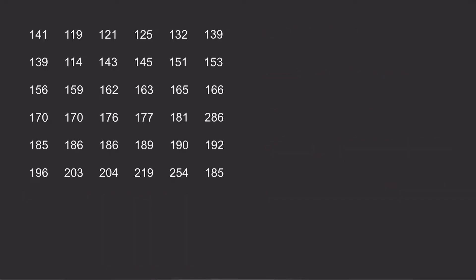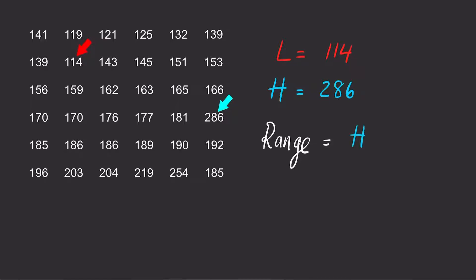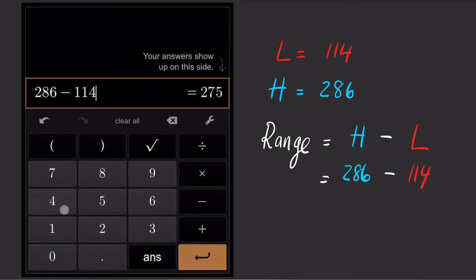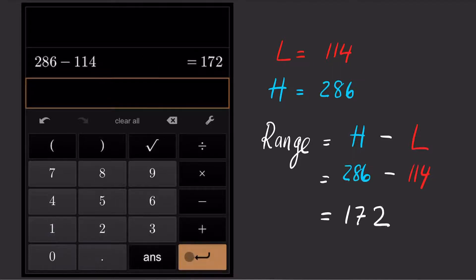To make five classes for the frequency distribution table, first find the lowest number in the dataset, which is 114, and then find the highest number in the dataset, which is 286. Then subtract the highest number by the lowest number to get the range, which is 286 minus 114 equals 172.